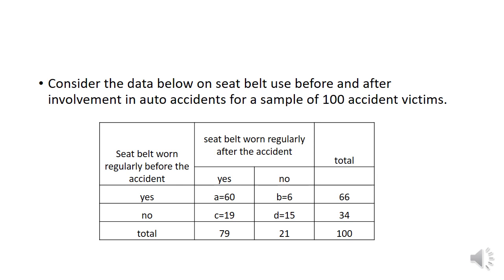For the a value: seatbelt worn regularly before the accident — yes — and after the accident — also yes — we have 60. For b, wearing seatbelt before the accident and not wearing after the accident, we have 6. For c, not wearing before the accident and wearing after the accident, that is 19. And for d, not wearing seatbelt before and after the accident, that is 15.